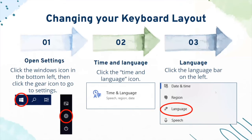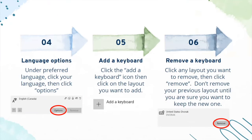On a Windows device, here's how to change your keyboard layout. First, open Settings, then go to the Time and Language category, and on the left sidebar click Language. Then, going to your language options, under your preferred language — in this example, English Canadian — click Options, then Add a Keyboard, and you can use it. If you ever want to get rid of it, all you have to do is click the Remove button.